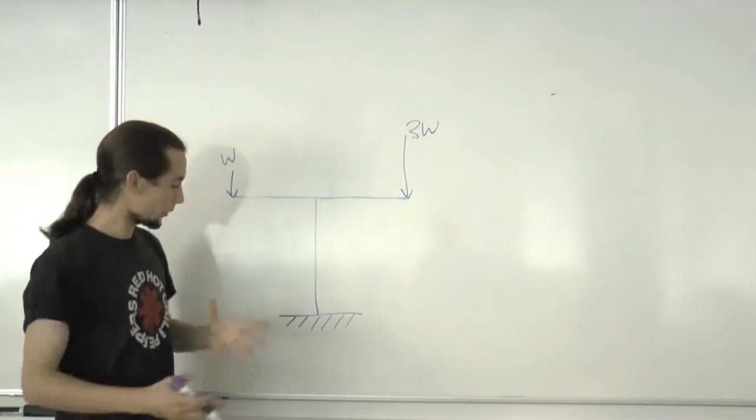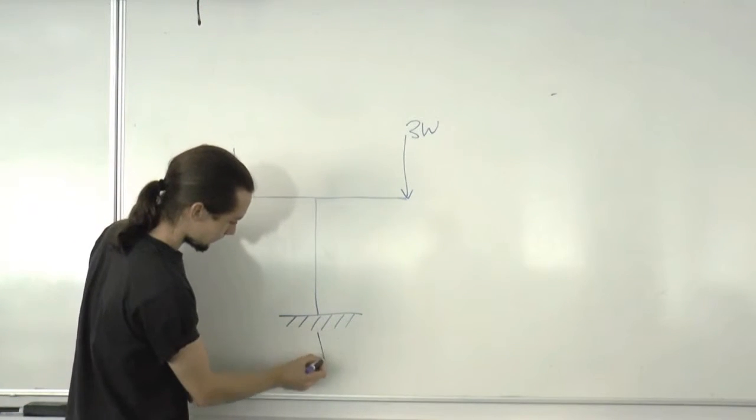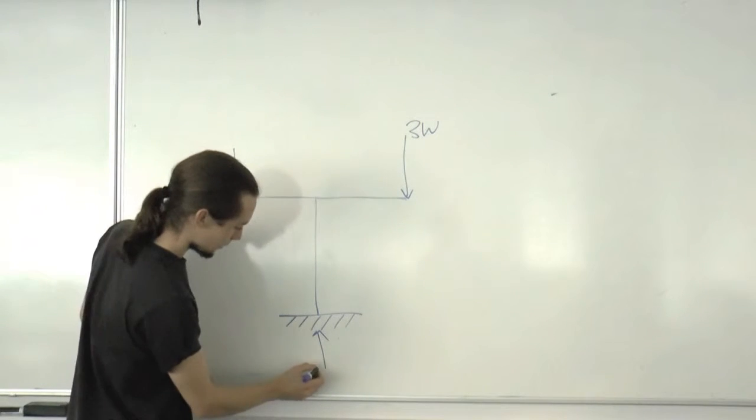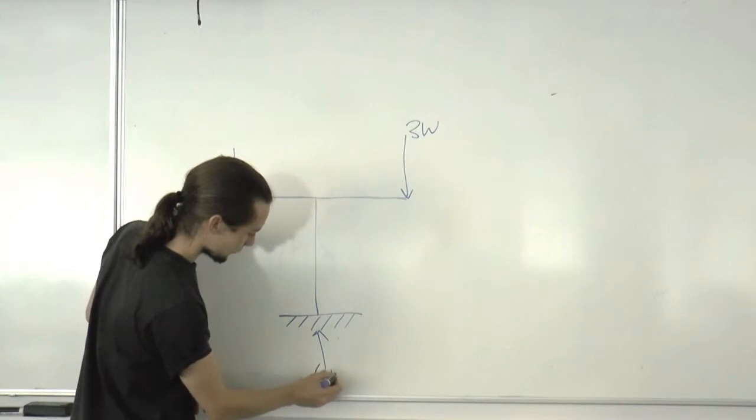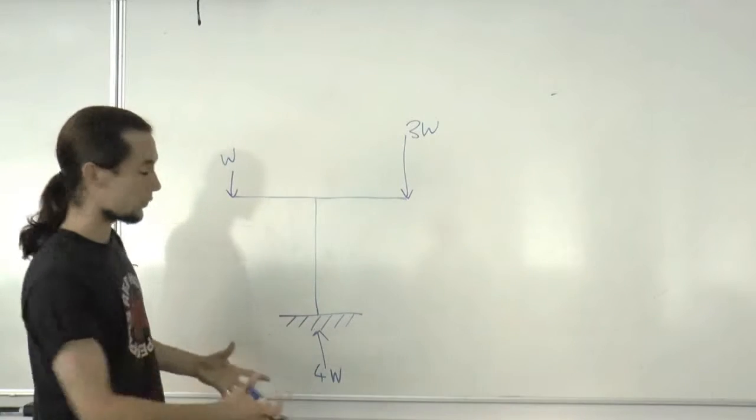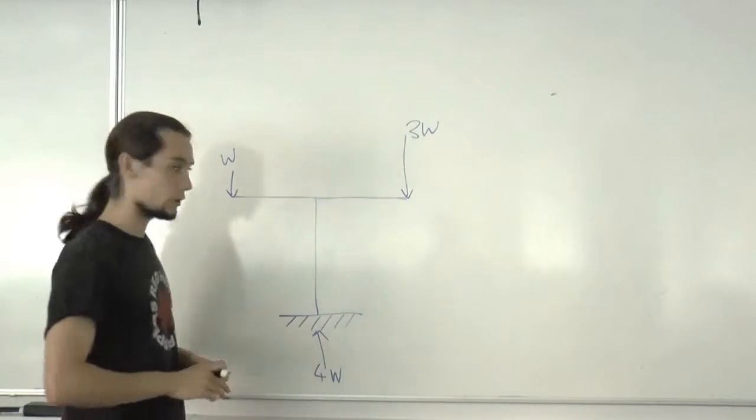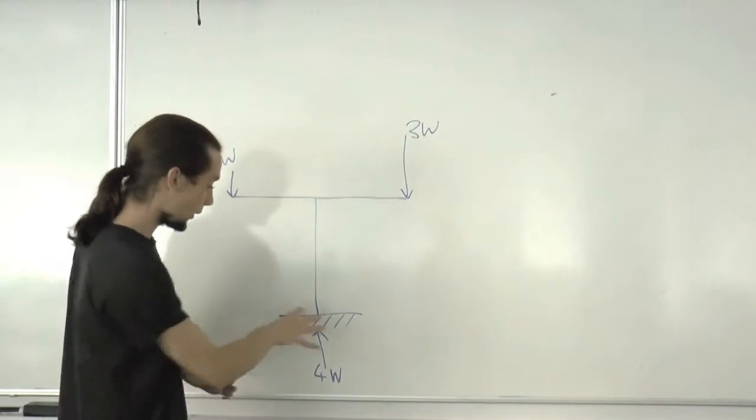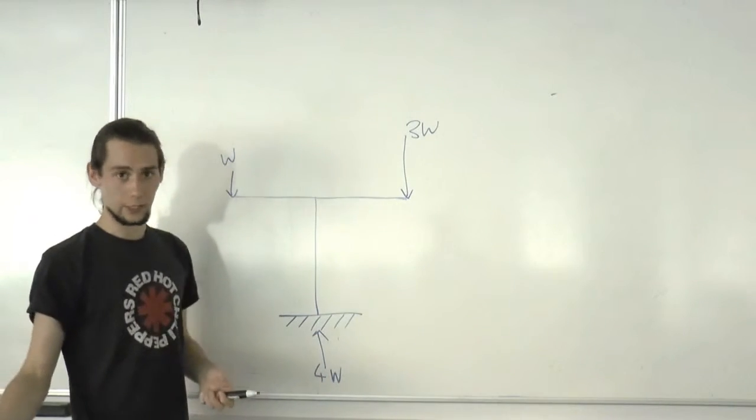First off, let's find the reactions. It's quite obvious we're going to have 4W upwards from here. We can start off with this and start to draw the bending moment diagram. We can also tell there's going to be no horizontal reactions.